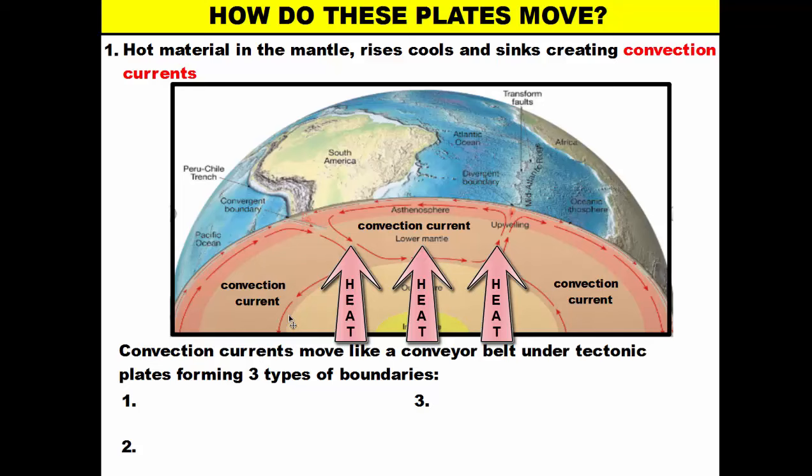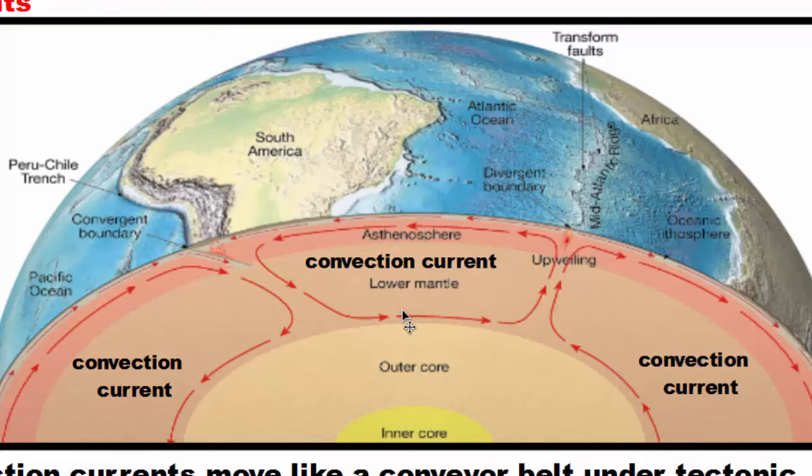In convection, hot material in the mantle rises because as the Earth's core releases heat, it heats up the bottom part of the mantle. As that material in the mantle gets warmer and warmer, its density decreases and it rises. So here you have a convection current where convection is happening — this lower part of the mantle material warms up and rises because it is less dense.